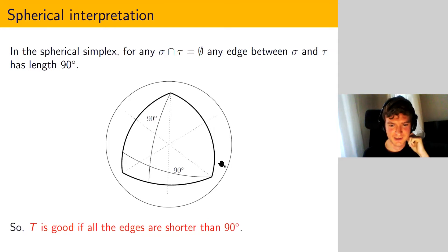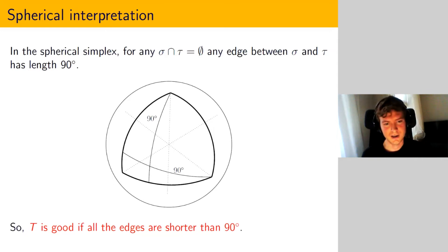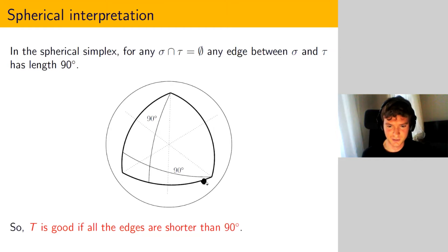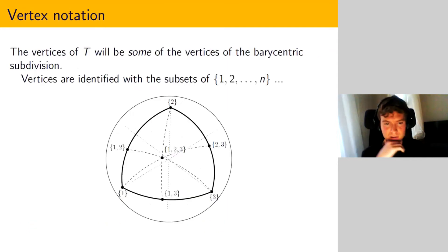Let's re-interpret this condition geometrically. We consider our facet as a unit spherical simplex on a sphere. We look for geometric triangulations where vertices lie on the sphere and edges are geodesics. Any two disjoint faces sigma and tau of the simplex have geodesic distance exactly 90 degrees between them. So we want a geometric triangulation where all edges are strictly shorter than 90 degrees.